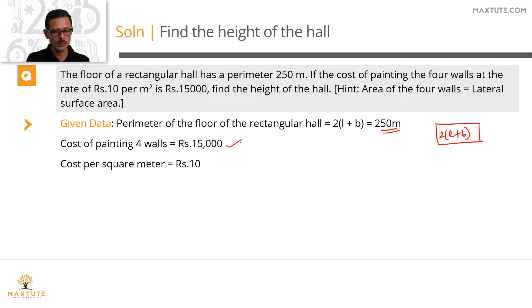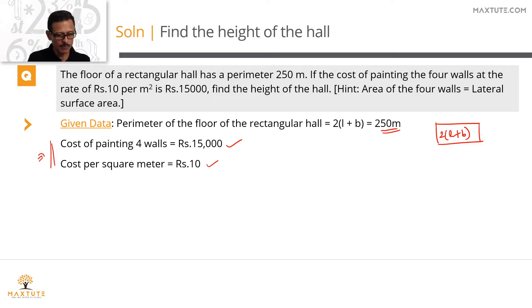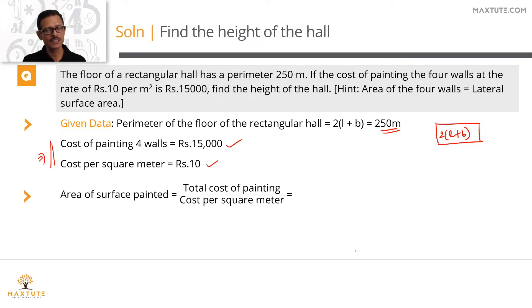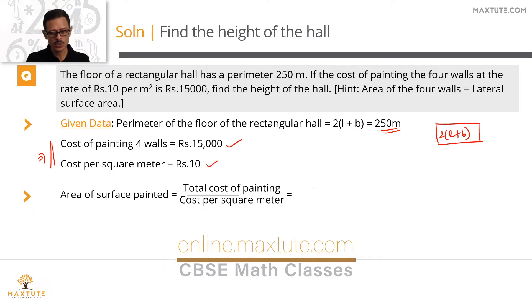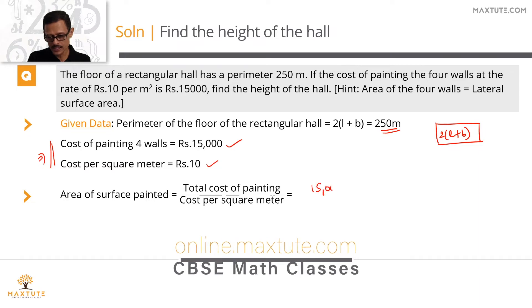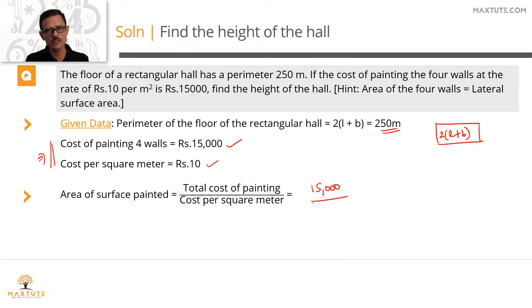Second data given: it costs 15,000 rupees to paint the 4 walls, and the cost per square meter is 10 rupees. Using these two data points, we can compute the area of the 4 walls painted. The area of surface painted equals total cost divided by cost per square meter — that is 15,000 divided by 10 — so 1,500 square meters would have been painted.